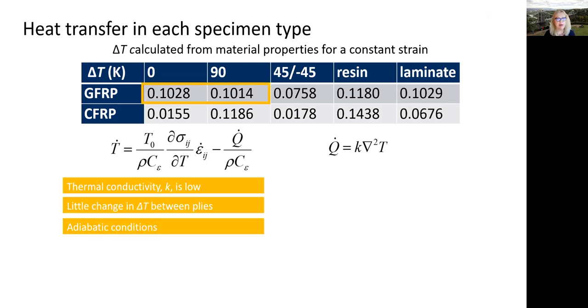If we look at the GFRP, we can see that the thermal conductivity for our glass fiber polymers is very low. But we can also see that there's little change in delta T between the plies. So this means that there can be no heat transfer and we maintain adiabatic conditions.